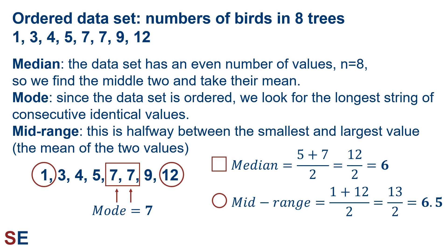This data set has an even number of values, n equals 8, so we find the middle two values and take their mean. That's the 5 and the 7. 5 plus 7 equals 12, divided by 2, gives us a median of 6. For the mode, since the data is ordered, we can look for the longest string of consecutive identical values. In this data set, there's only one value that occurs more than once, and that's the 7, which occurs twice, so that's our mode.